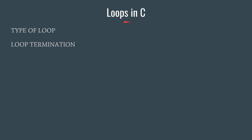The two topics we will discuss are types of loop and loop termination. C essentially supports three types of loops: the for loop, while loop, and do-while loop.